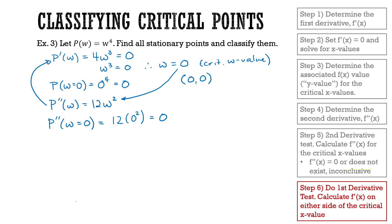To go forward, we're going to perform the first derivative test. We recognize where our critical point is on the scale of w's — when w is equal to 0. We're going to choose a point greater than w = 0 and a point lower than w = 0, and calculate the first derivative on either side of this critical value.